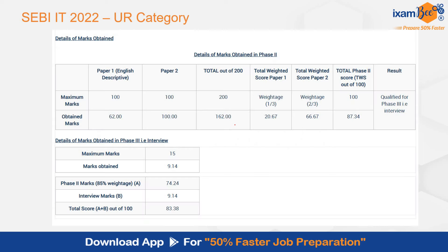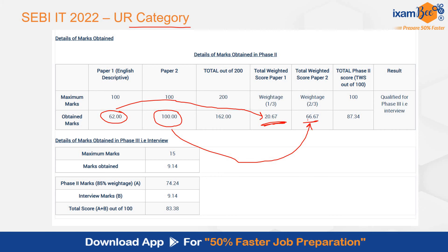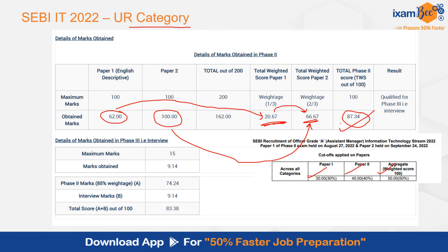Looking at mark sheets from July 2022, when 24 vacancies were available — here is the mark sheet of one selected unreserved category student. That student got 62 in Descriptive English and 100 in the coding paper. Paper 1 has 1/3rd weightage, so 62 × 1/3 = 20.67, and 100 × 2/3 = 66.67. The total phase 2 score is 87.34. Phase 2 has 85% weightage, so 87.34 × 0.85 gives the weighted score. The student got 9.14 in the interview, which is directly added, giving an overall score of 83.38.